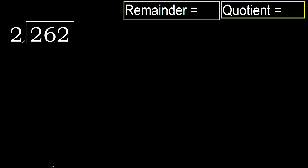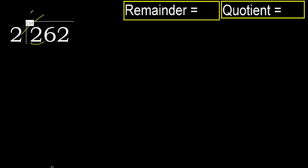262 divided by 2. Let's perform with 2. 2 multiplied by which number is nearest to 2, but not greater? 2 multiplied by 2 is 4, which is greater. Multiply by 1 is 2, which is not greater. Ok.